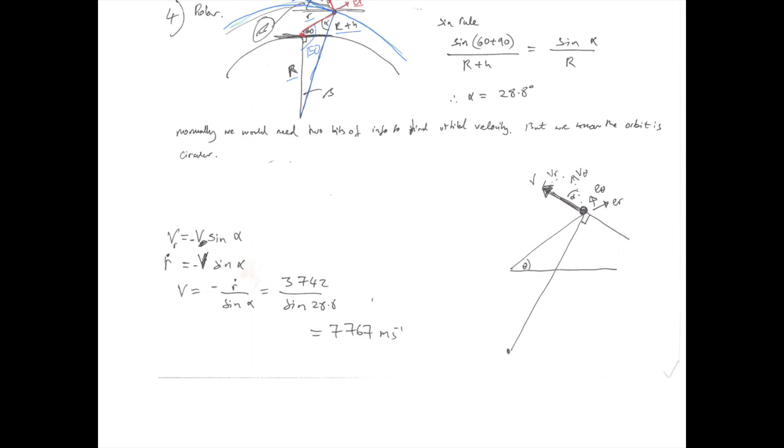So minus of R dot is going to give you the positive 3,742 divided by sine alpha, is going to give you 7.767 kilometers per second.